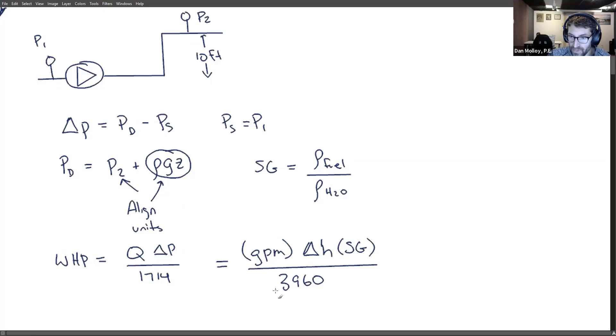And by the way, what's the difference between 3960 and 1714 for those who are paying close attention? This is a factor of, well, actually it would be dividing by 2.31, which is our convenient little rule of thumb for going from PSI to feet when it comes to pressure. So that shouldn't be surprising after you've done enough of these problems.